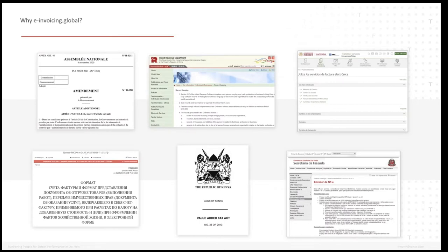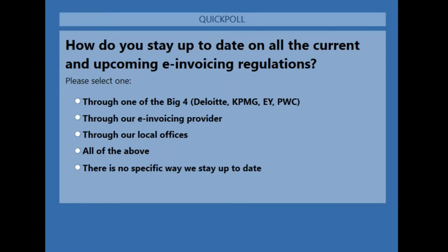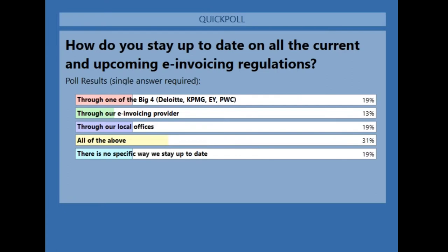In a short demonstration, we'll show how we inform our clients about electronic invoicing: showing regulations, timelines, and when changes will take effect, so you can be prepared for coming regulations. Before the demo, we asked: how do you stay up to date on invoicing regulations? Is it through the Big Four, your invoicing provider, local offices, all of the above, or is there no specific way?